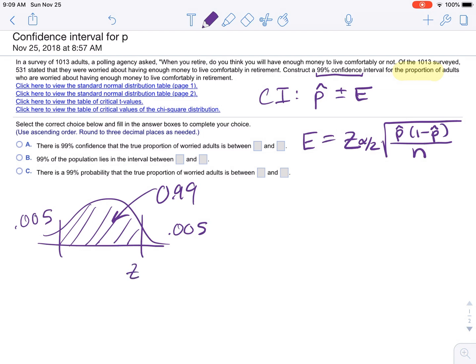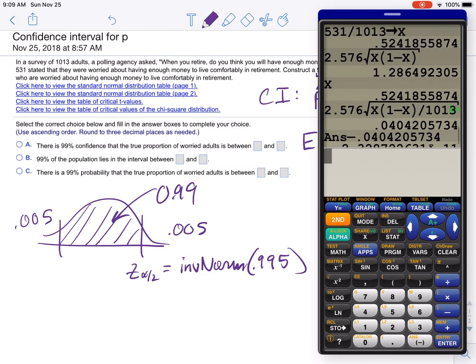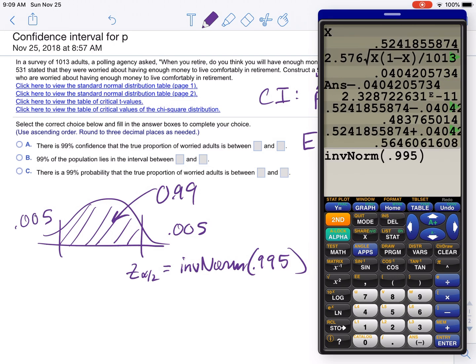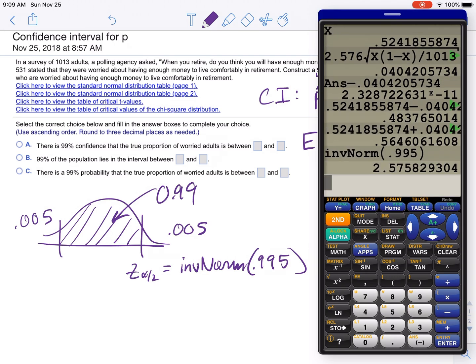And therefore, this Z alpha over 2 right here can be found with inverse norm. And then 0.995. So if you do that, I think I did it somewhere there.